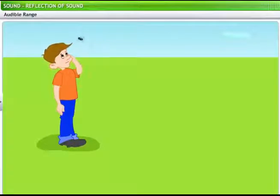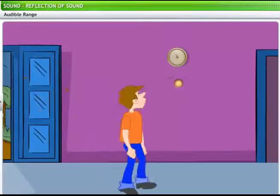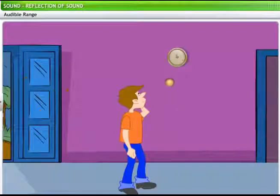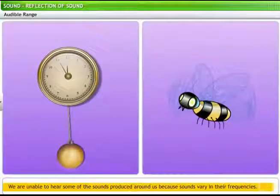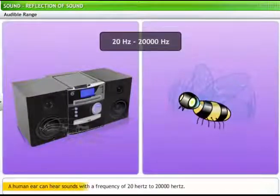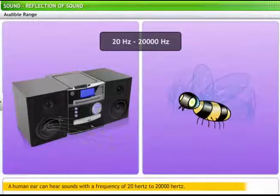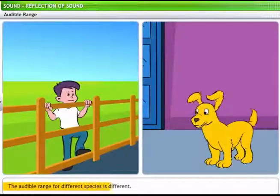The buzzing of a bee is clearly audible. In fact, sometimes we wish it wasn't so loud. However, though we can see the pendulum vibrating, it doesn't seem to be producing a sound. Look at the boys trying to hear the sound of the pendulum. We are unable to hear some of the sounds produced around us because sounds vary in their frequencies. A human ear can only hear sounds that are within a frequency of 20 Hz to 20,000 Hz. This range of frequency is called the audible range. We cannot hear sounds with a frequency lesser or greater than this audible range. However, the audible range for different species is different.